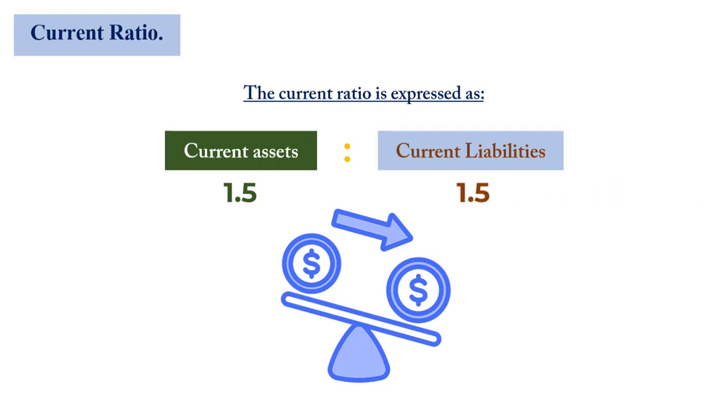If it is equal to one, it means that the business has just enough resources to set off its debt. If it is less than one, that is a very dangerous position for a business to be in, which means that the business might fall on other resources, especially the capital, to settle its current liabilities.